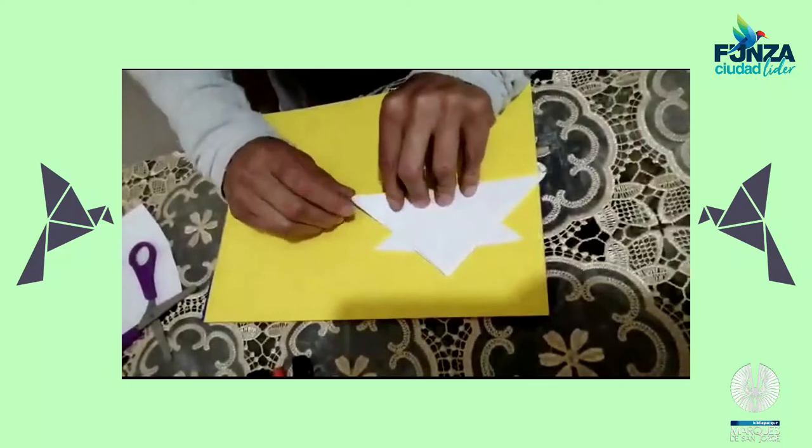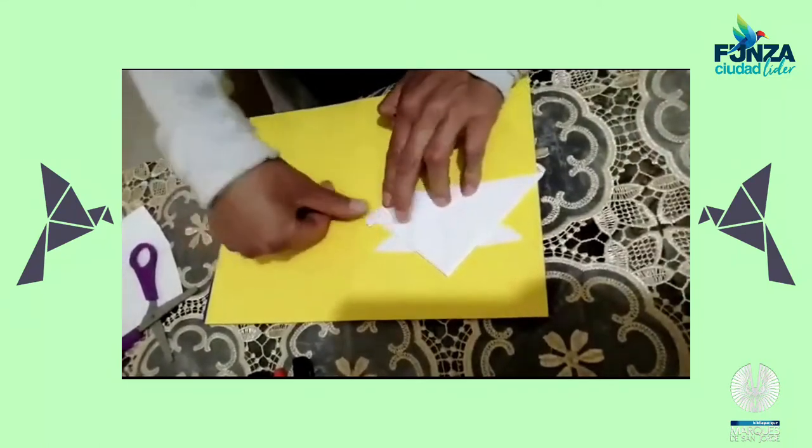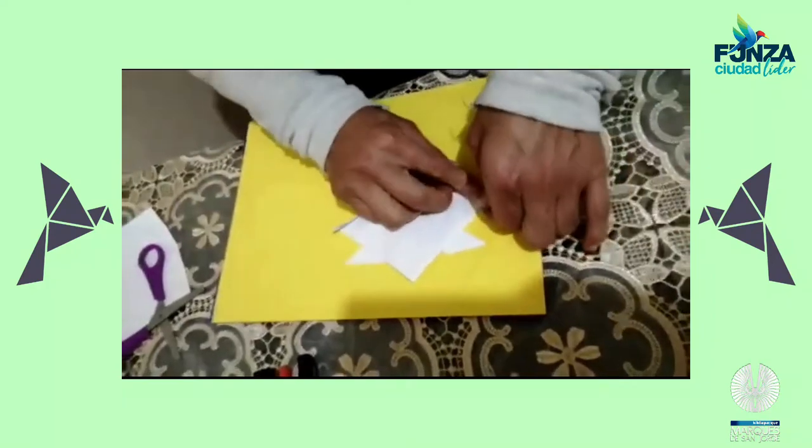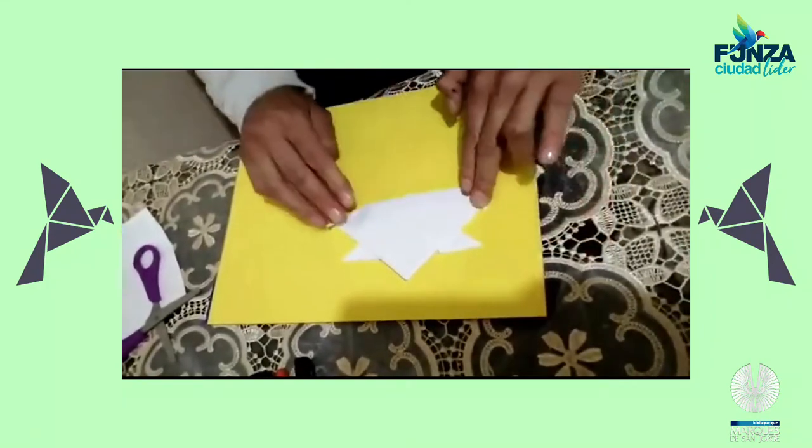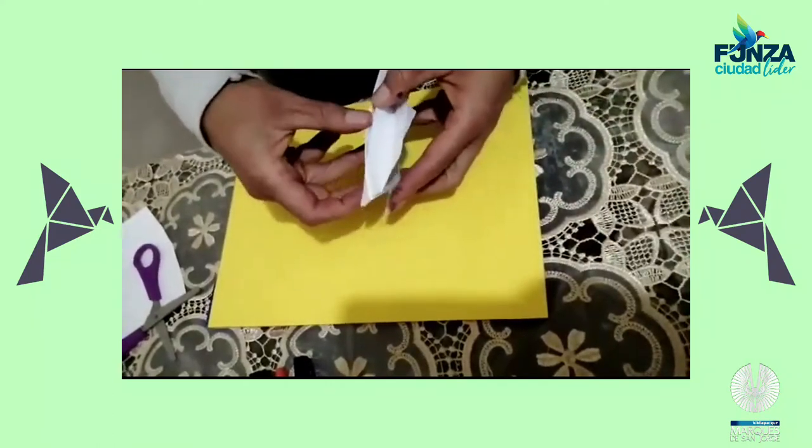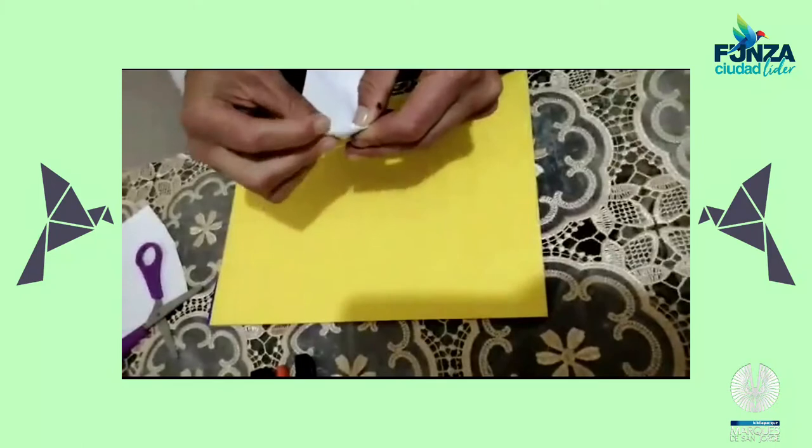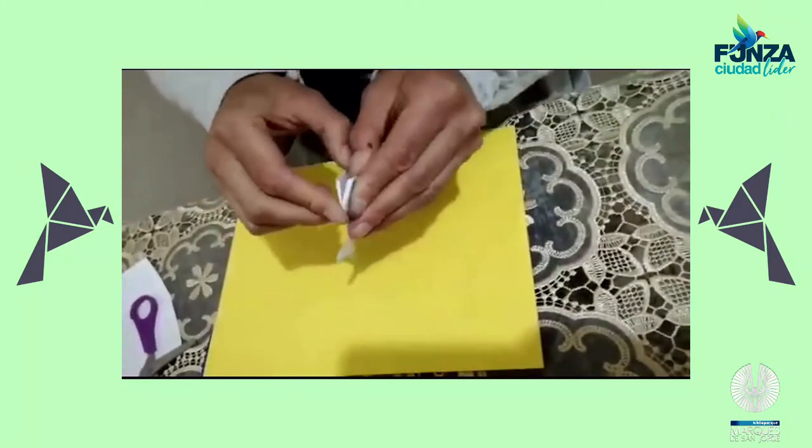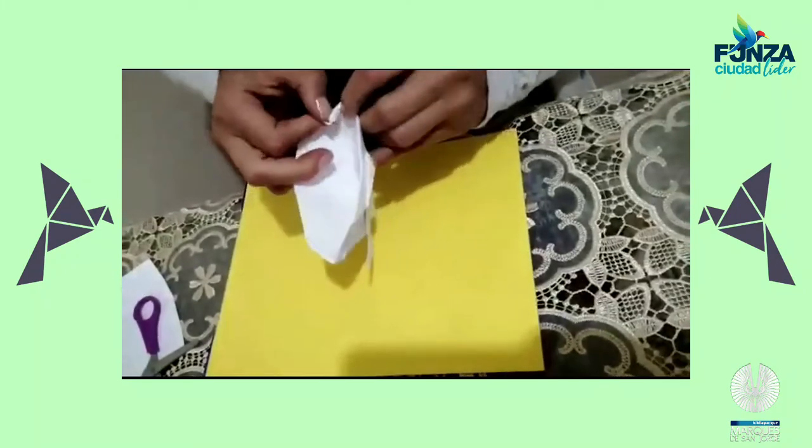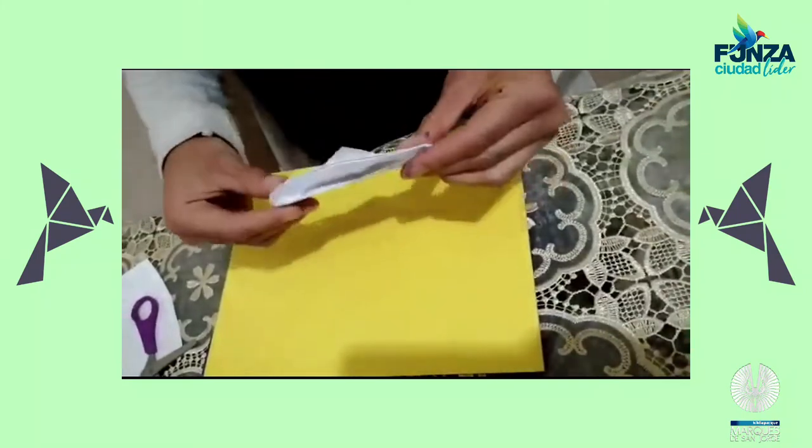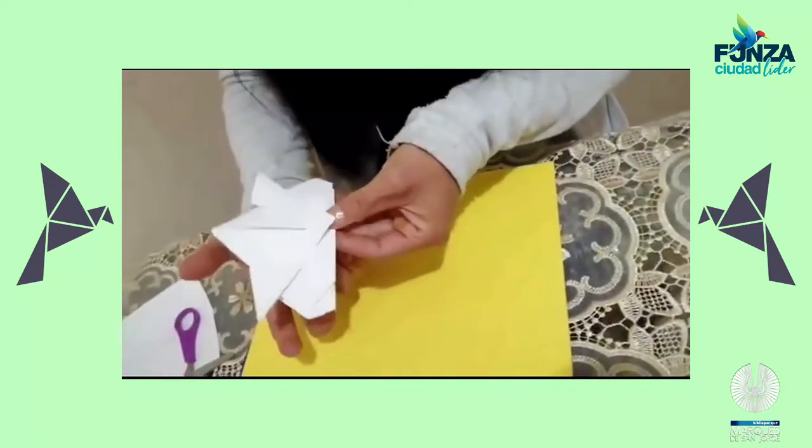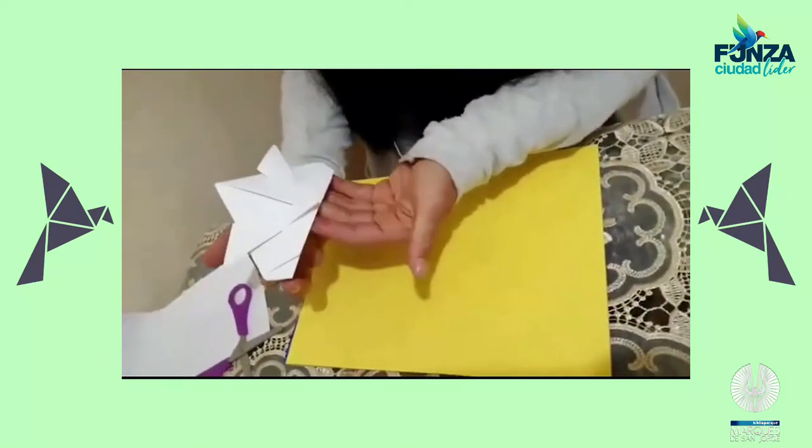Listo. Vamos a doblar esta parte de la esquina un poquito. Aquí otro poquito. Después la abrimos por la parte de abajo y vamos a meter las pestañitas. Listo. Vamos con la decoración. Así nos va a quedar nuestro Angry Bird.